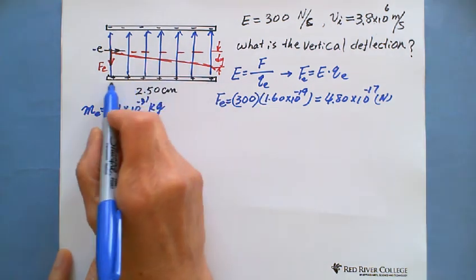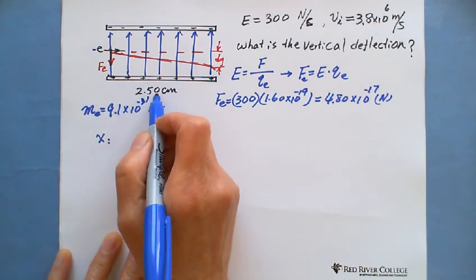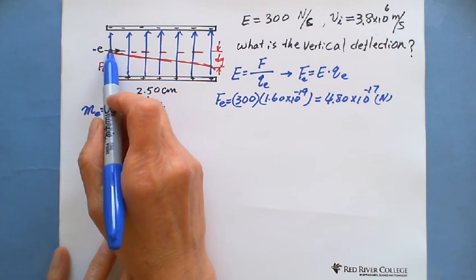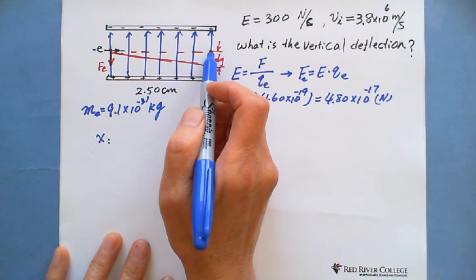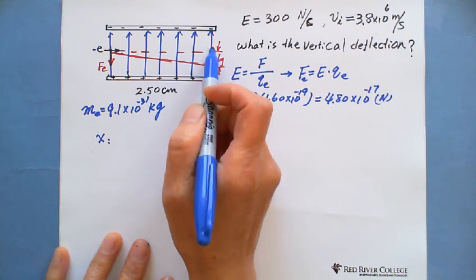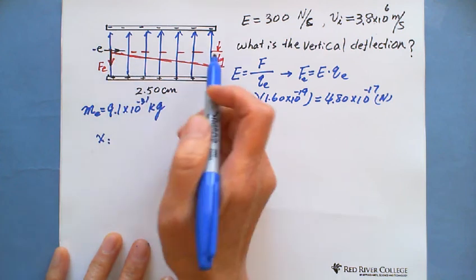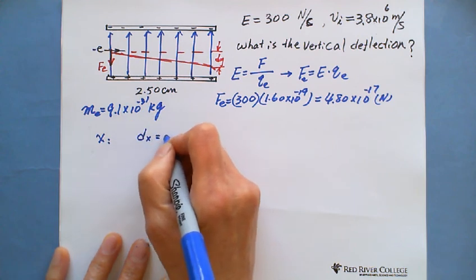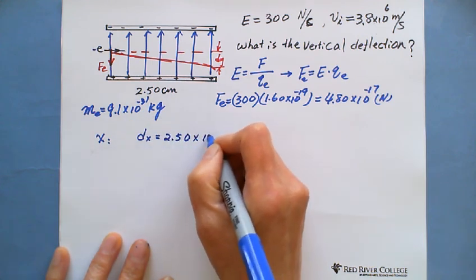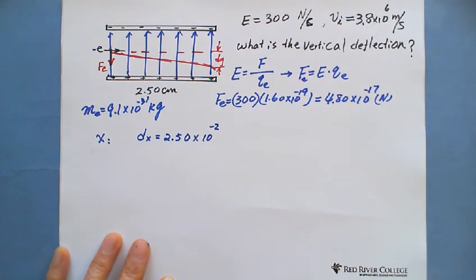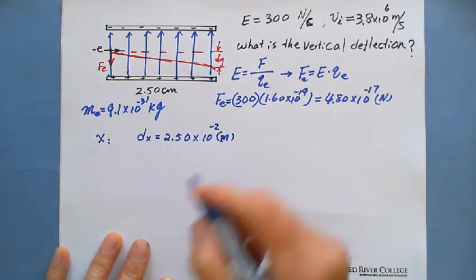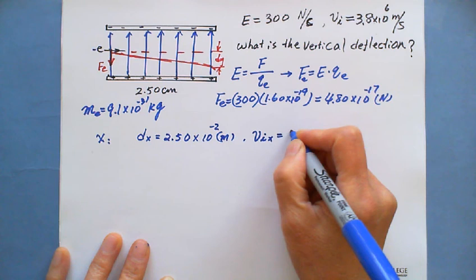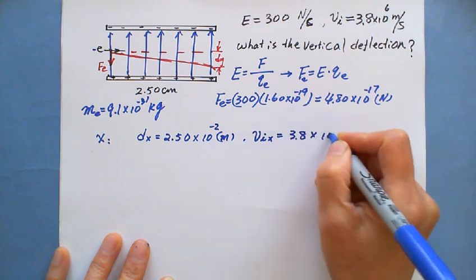So we can find, because you're given the plate is 2.5 cm long. So the electron in horizontal motion from initial to this point, which is just exiting the parallel plate, and the distance is 2.5 cm, which is the dx. You can see the dx is 2.5 times 10 to the negative 2. We need to convert to meters.